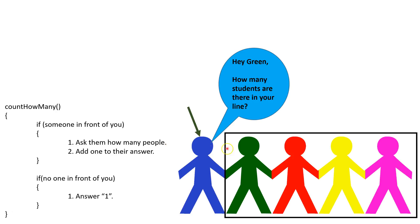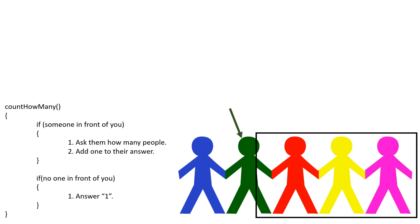The next person, green, looks at the line, sees there is someone in front of them, and asks how many people are in your line.